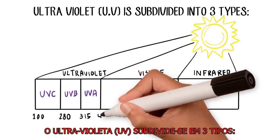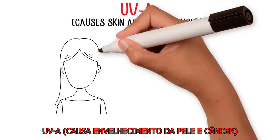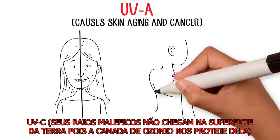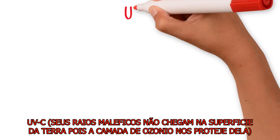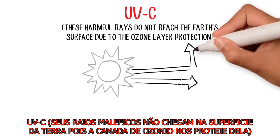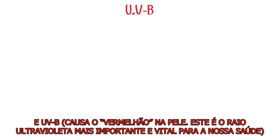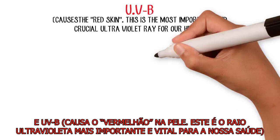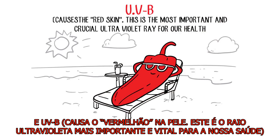UVA causes skin aging and cancer. UVC — these harmful rays do not reach the Earth's surface due to the ozone layer protection. UVB causes red skin; this is the most important and crucial ultraviolet ray for our health.